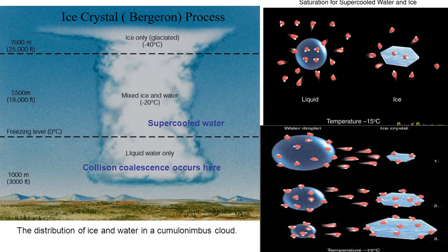Surprisingly, in the cold air just above the zero degree isotherm level, almost all of the cloud droplets are still composed of liquid water. Water droplets existing at temperatures below the freezing point are referred to as supercooled droplets or supercooled water.